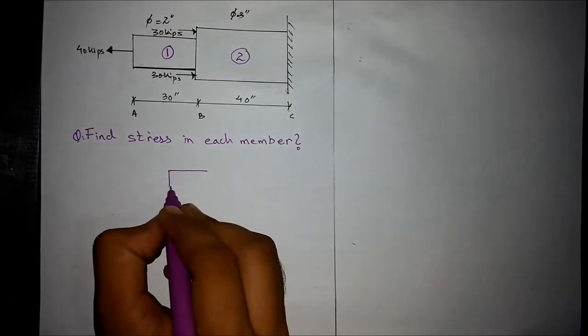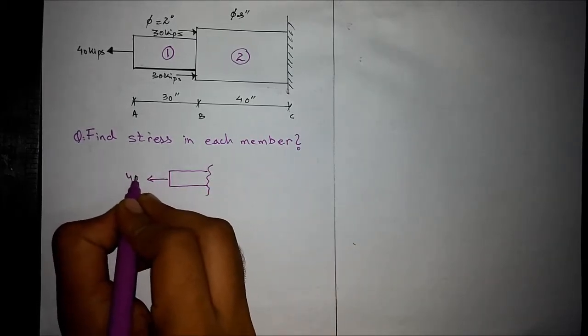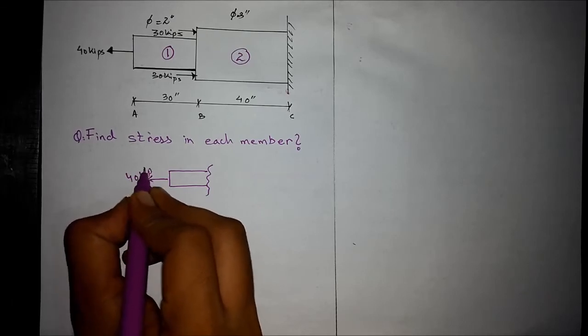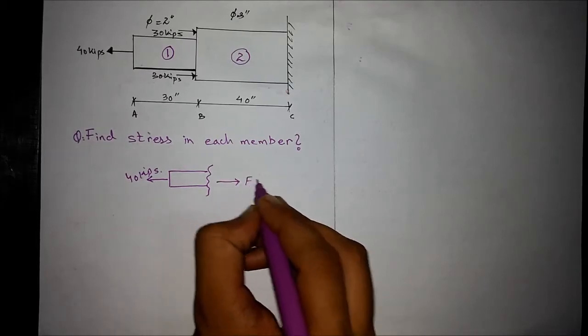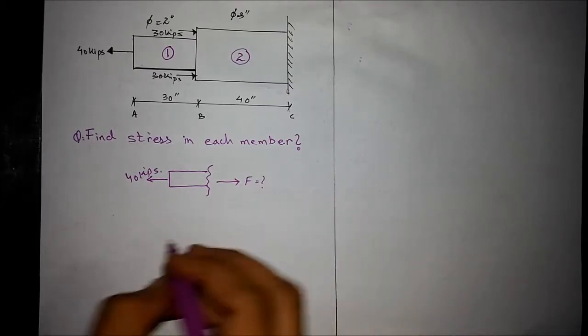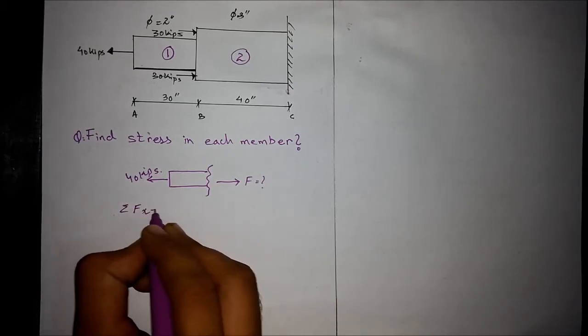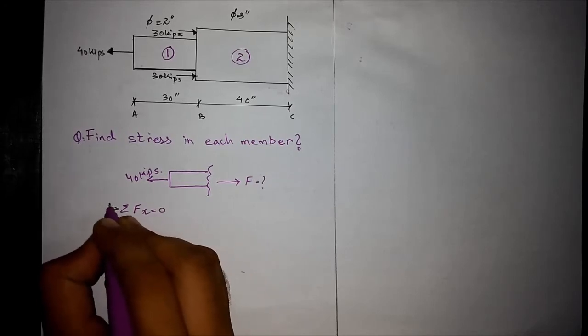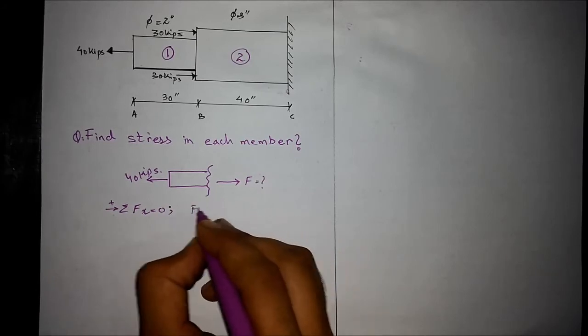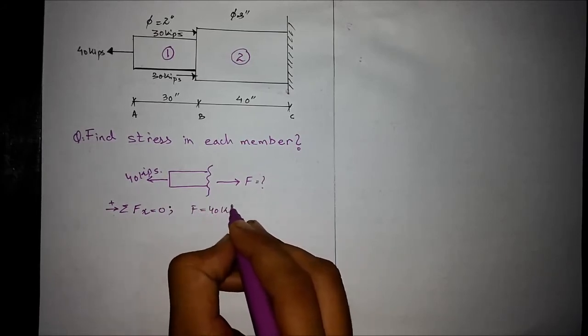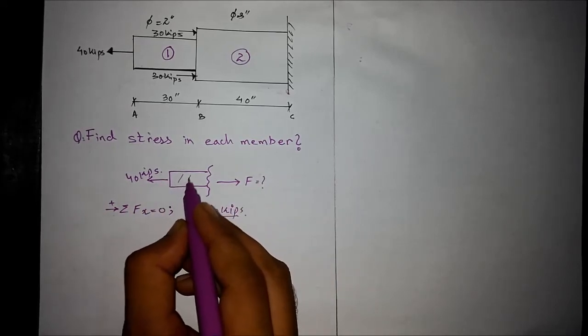We have a 40 kips force and take this force as unknown. For finding out the stress, we apply the equation of equilibrium: sum of forces in the x direction equals zero. We have F equals 40 kips for finding out the stress in this member.